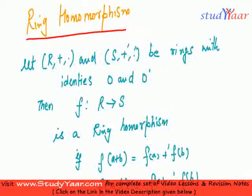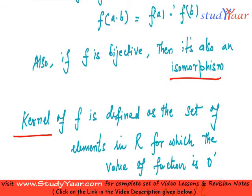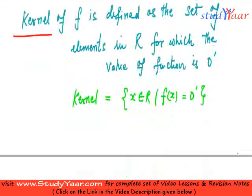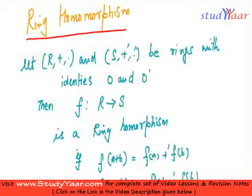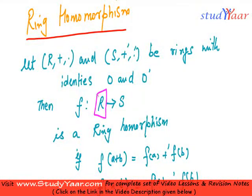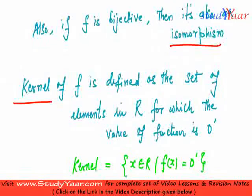Now there is one additional concept related to homomorphisms and that is the concept of kernel of f. The kernel of f is defined as the set of all elements in R, my f is from R to S, so kernel of f is defined as elements in R for which the function returns me the value as 0 dash.